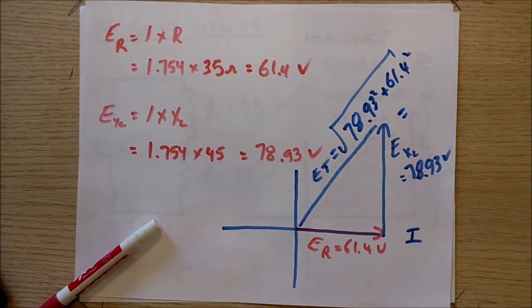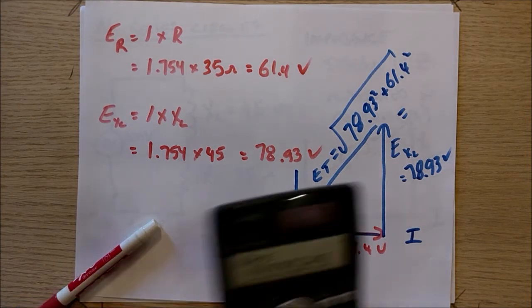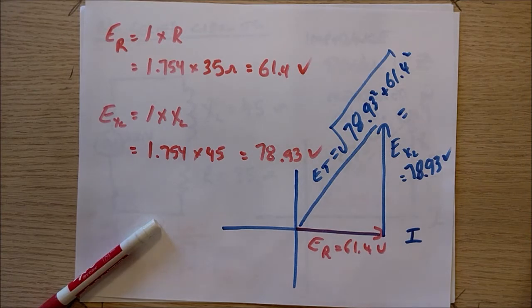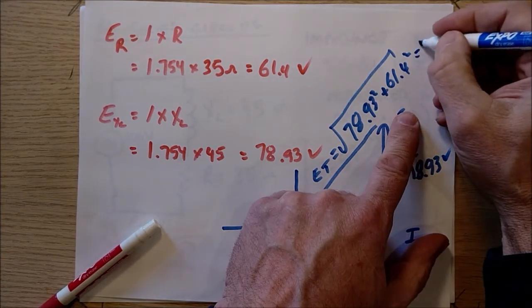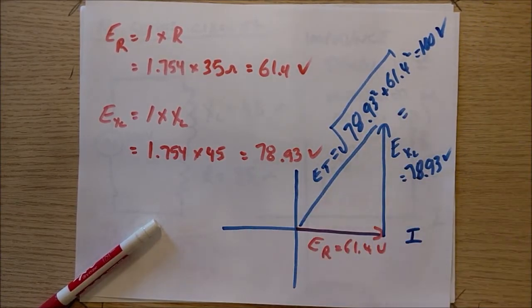And let's just see. I'm going to calculate it right off camera here. Plus 61.4 squared equals root equals, comes to 99.999. So that equals 100 volts. Boom. How do you like that?